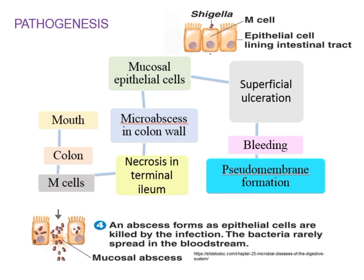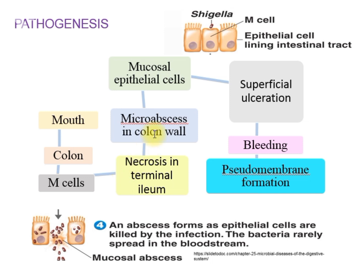In the pathogenesis of shigellosis, the bacteria is acquired by ingestion through the mouth and goes to the large intestine. In between, it survives the gastric acid present in the stomach. In the colon, the bacteria is picked up by special cells with invaginations called M cells, present in Peyer's patches. From the M cells, they may cause necrosis in the terminal ileum and micro-abscesses in the colon wall.